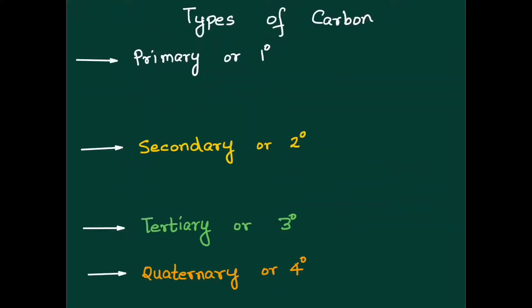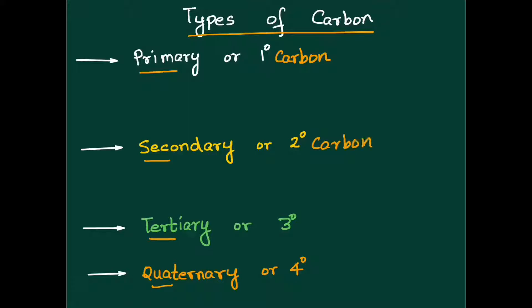We are talking about the various terminologies we use with the types of carbon atom. As we study and take further our concepts of organic chemistry, these are some of the terms you will come across very often: primary or one degree carbon or primary hydrogen, secondary or two degree carbon, tertiary or three degree, quaternary or four degree.